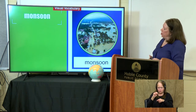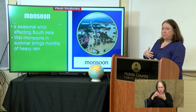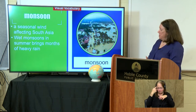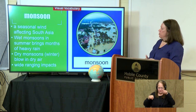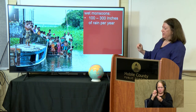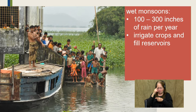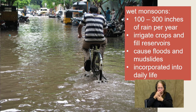Monsoon is a word we need to know when talking about South Asia. A monsoon is a seasonal wind that affects this part of the world. Wet monsoons bring months of rain — imagine it starts raining and doesn't stop for three to four months. They also have dry monsoons that bring dry air, and both have wide-ranging impacts for this region. In some areas of India and Bangladesh, they can expect anywhere from 100 to 300 inches of rain per year. They need that to fill their reservoirs, because when the dry monsoons come they won't have that same water. However, it does cause floods and mudslides, so it's a double-edged sword.